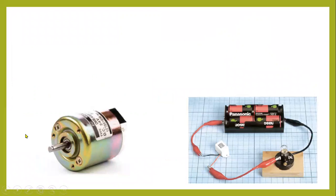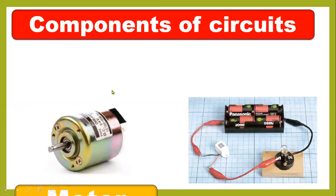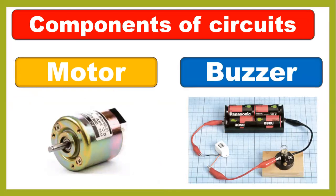As you can see, we have two pictures. The first one is the motor and the second one is the buzzer. The motor makes things spin — like washing machines. The buzzer makes things sound. Here you can see a simple circuit: when the bulb turns on, the buzzer will make a sound; when the bulb turns off, the buzzer will not make any sound.